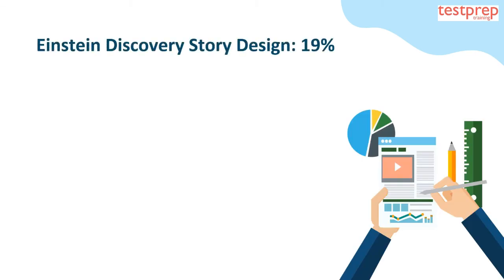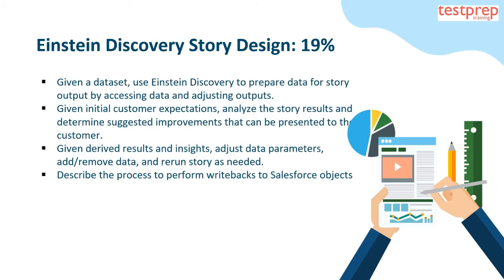Einstein Discovery Story Design (19%): given a data set, use Einstein Discovery to prepare data for story output by accessing data and adjusting outputs. Analyze story results and determine suggested improvements to present to the customer. Adjust data parameters, add or remove data, and rerun the story as needed. Describe the process to perform write-backs to Salesforce objects.